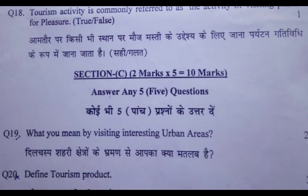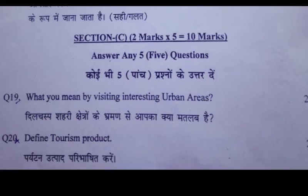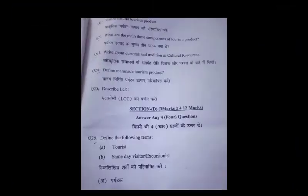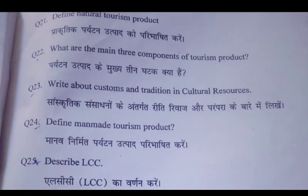Section C: Give answers to any 5 questions. Question 19: What do you mean by visiting interesting urban areas? Question 20: Define tourism product. Question 21: Define natural tourism product. Question 22: What are the main 3 components of tourism product?